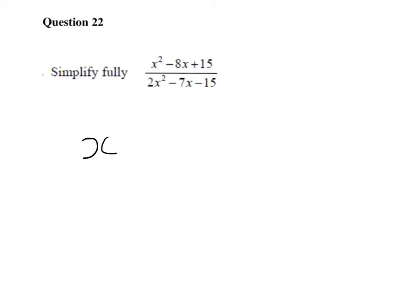What we notice here is that we have a plus at the end and a minus in the middle. That can only come from two minuses. Now we need factors of 15, but when put together, give me 8. So that will come from 3 and 5. So that's the top factorised.